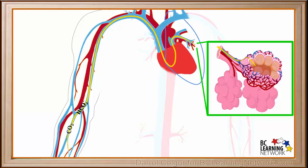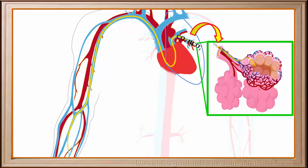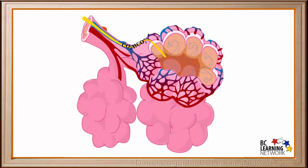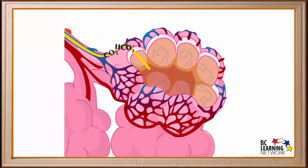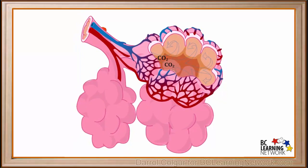Now we'll imagine the bicarbonate and CO2 moving up the vein in the arm, into the vena cava, through the heart, and then into the pulmonary artery. Bicarbonate and CO2 travel into the capillaries surrounding an alveolus. Conditions at the alveoli cause bicarbonate ions to change back to carbon dioxide gas. Carbon dioxide diffuses from the capillary through the membrane and into the interior of the alveolus. When we exhale, carbon dioxide moves out of the alveoli and eventually out of the body.